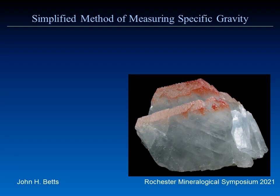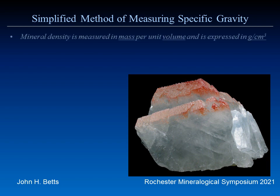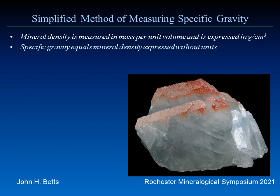This is a presentation on a simplified method for measuring specific gravity. Mineral density is mass per unit volume, expressed in grams per cubic centimeter. Specific gravity is the same as mineral density, but expressed without units — it's just a simple number, and you'll see that in almost all mineral references.